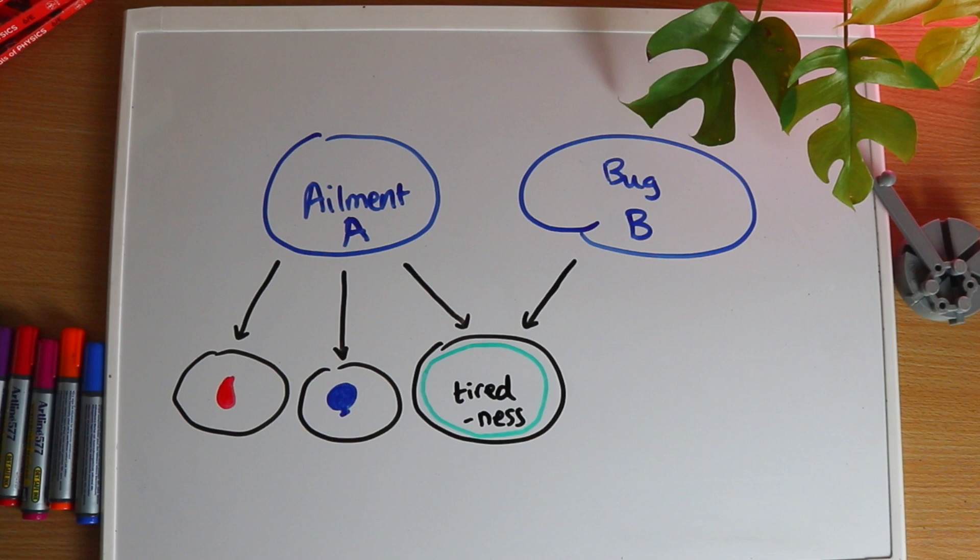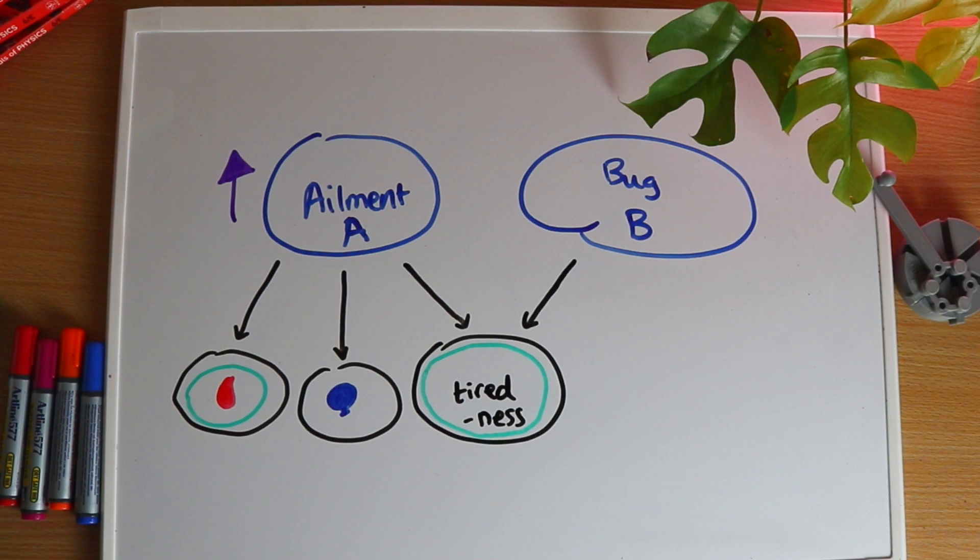Let's ask about something that's a common symptom of A, but isn't super common amongst people without A and isn't caused by B. If a person says that they have that symptom, then that would raise the probability of A. If you've done some econometrics before, then you might recognise this as an instrumental variable.